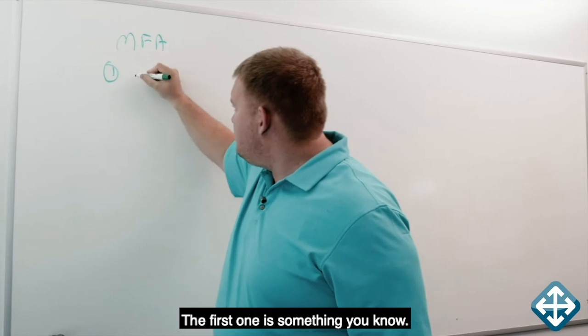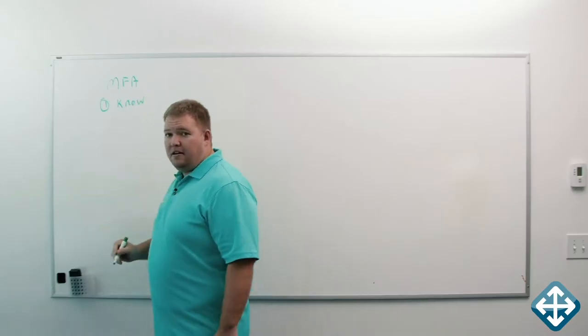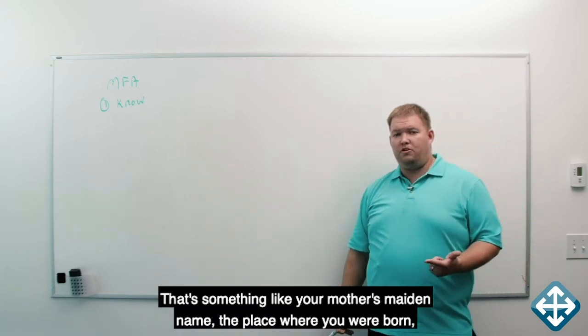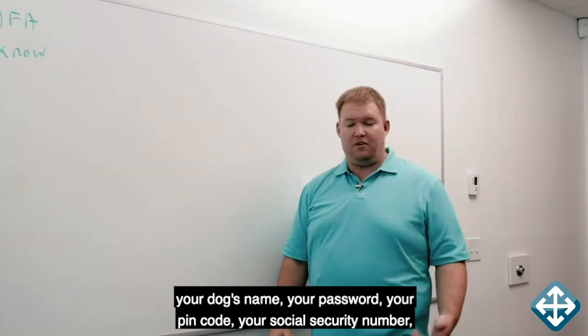The first one is something you know. That's something like your mother's maiden name, the place where you were born, your dog's name, your password, your pin code, your social security number, things of that nature.